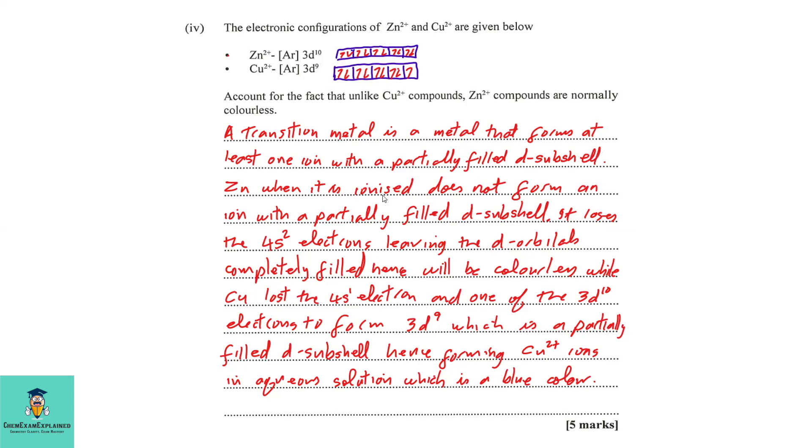So zinc, when it is ionized, does not form an ion with a partially filled D subshell. It loses the 4s two electrons, leaving the D orbital or the D subshell completely filled, hence will be colorless. While copper will lose the 4s one electron and one of the 3d10 electrons to form 3d9. Now, if you look at 3d9, you'll see that we have a partially filled D orbital. So once we have a partially filled D subshell, it means that this is a transition metal and a property of transition metal because of the variation in the oxidation states, they form colored compounds. So copper 2+ ions in solution will be blue, while zinc 2+ ions in solution will be colorless.